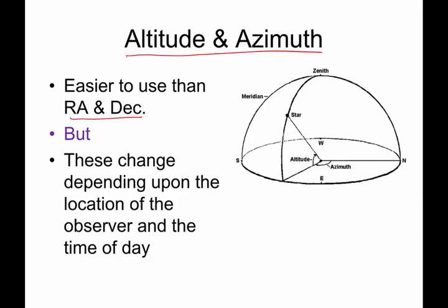Now altitude and azimuth I find much easier than right ascension and declination. But the challenge is it's going to change. The location of a star is going to change depending upon your location on the Earth and the time of day.